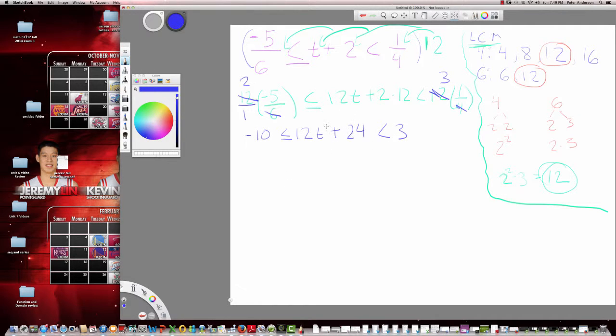All right, so from here, what do I do? Well, I want to get rid of the 24 now because I have a 10 and a 3 here, so I want to subtract 24, just do the opposite. And this breaks down to -34 is less than or equal to 12t, which is less than -21. Finish this guy off, I'm going to go through and I'm just going to divide through by 12. There's no worry about changing the signs because all of these numbers are—you're dividing them through by a positive 12.